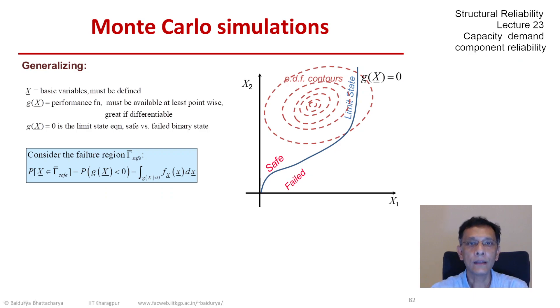This is then the mathematical description of the probability of failure. We have the failure region of gamma safe complement and the probability content of that region that x belongs to gamma safe complement is by definition p of gx less than 0. And that is given by the n dimensional integration of the joint density function of the x vector over the region where g is less than 0, or the unsafe region or the failed region.